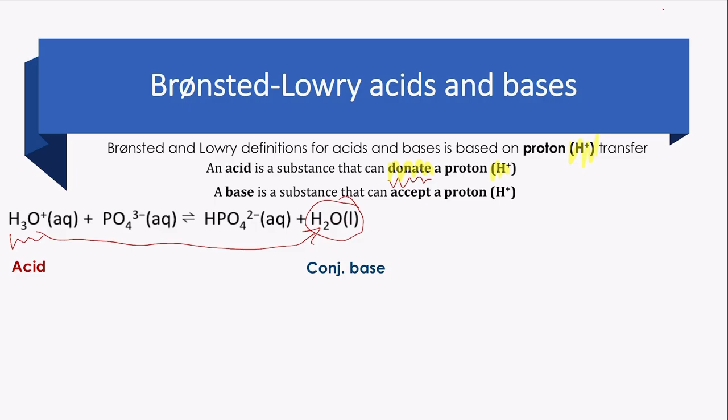What about PO4^3-? We will check what has happened to this specific reactant. It gained H+. For that reason, it is a base. And the product of the base after gaining H+ is a conjugate acid.